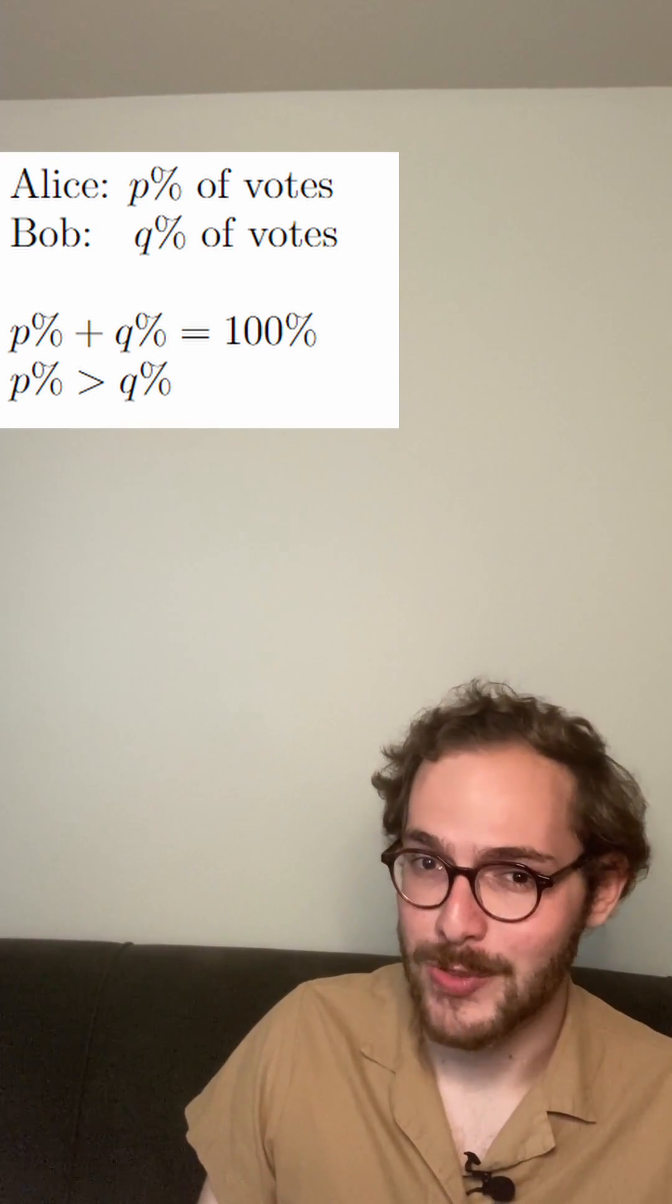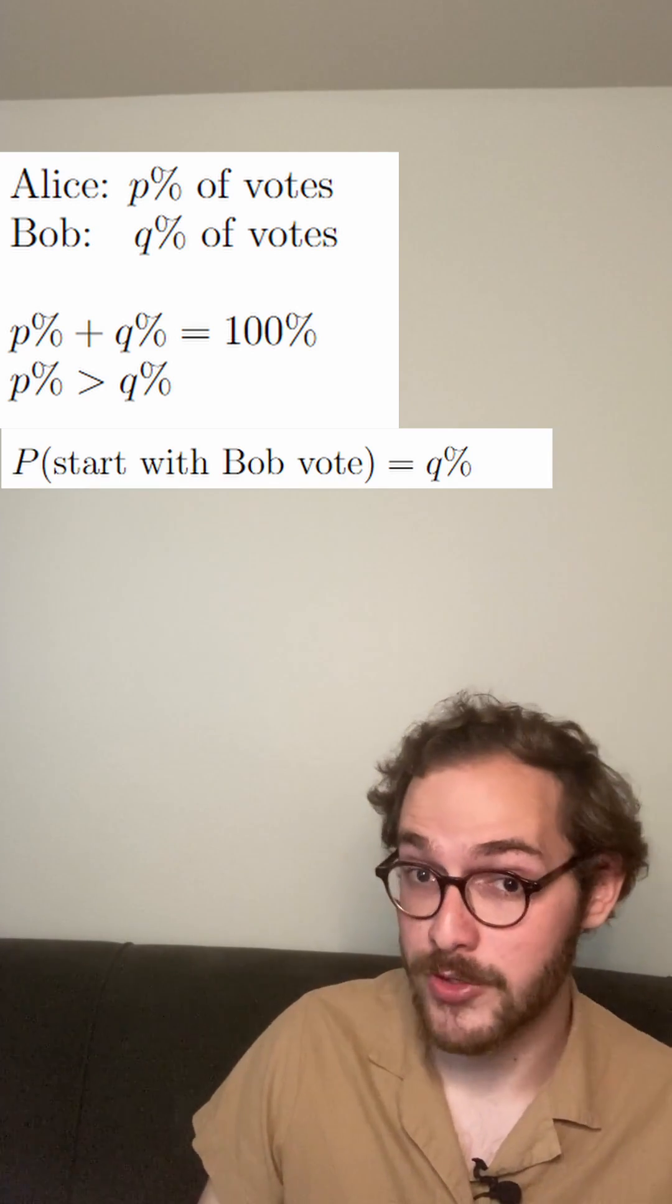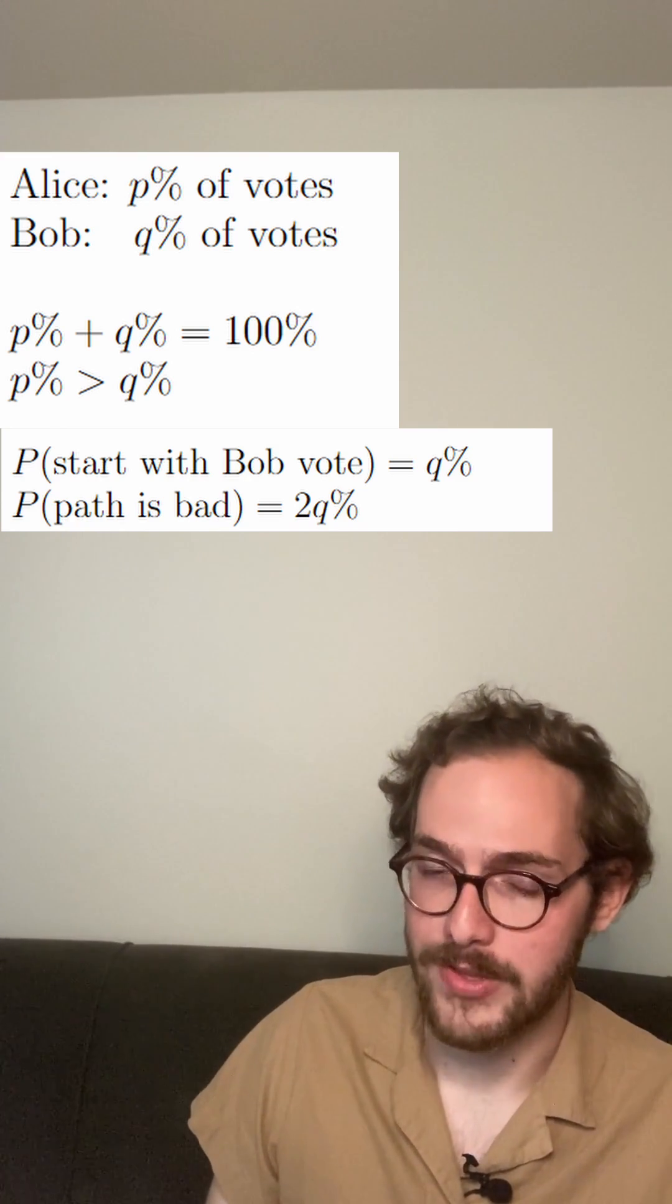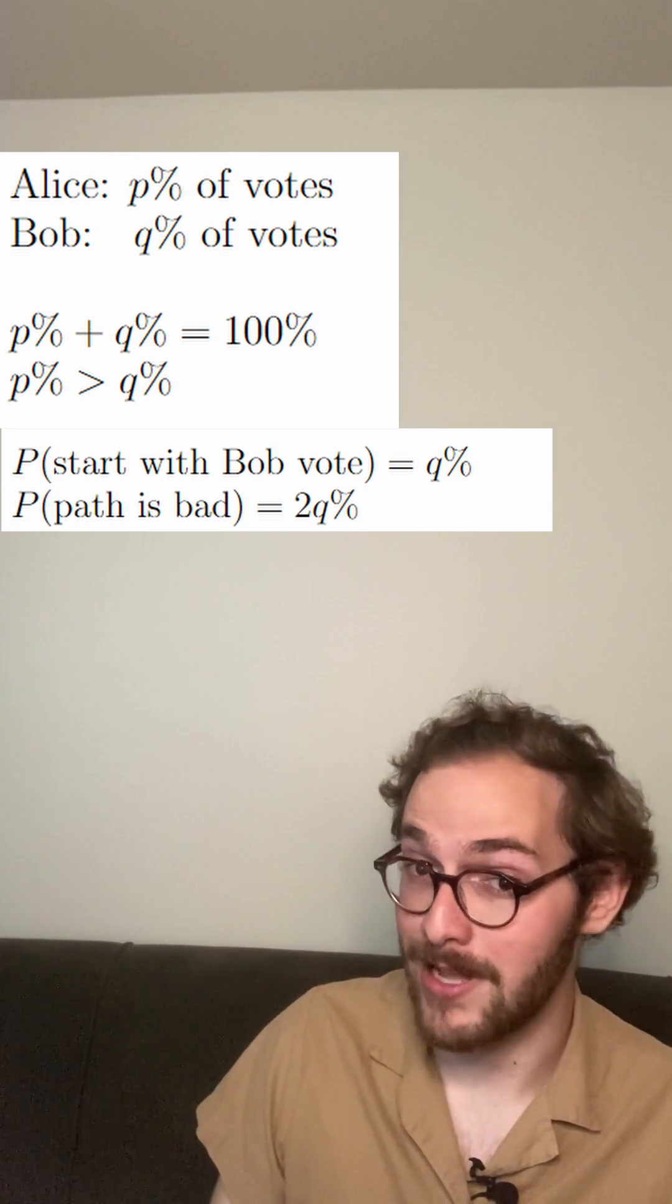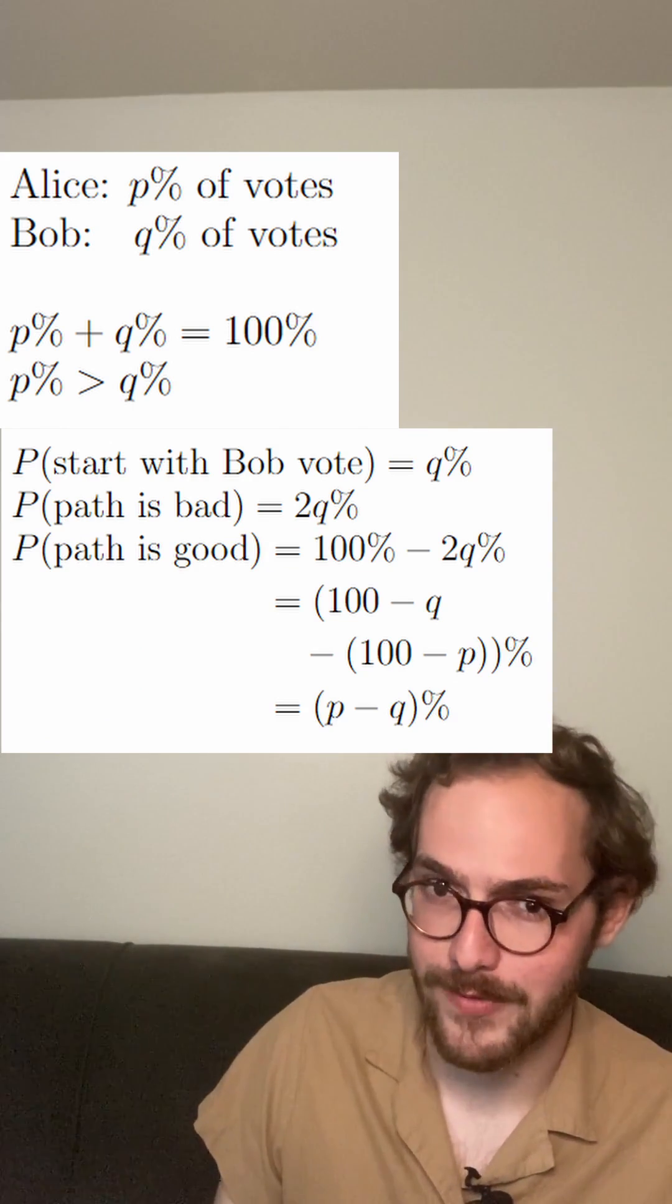But any path that starts with a Bob vote is a bad path, and there's a q% chance that our first vote is a Bob vote. Then two q% of all paths are bad paths, and with little algebra, we get that p minus q% of all paths are good paths, finishing the proof.